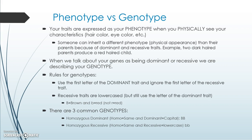Some rules to know for genotypes: if scientists don't provide a key, we typically use the first letter of the dominant trait. For example, using B for brown hair — capital B for brown (dominant), lowercase b for red (recessive). The recessive trait doesn't get its own letter; it uses the same letter as the dominant trait but in lowercase. So if someone's genotype is capital B lowercase b, that tells you they're a mix — their hair color would be a blend of brown and red traits.